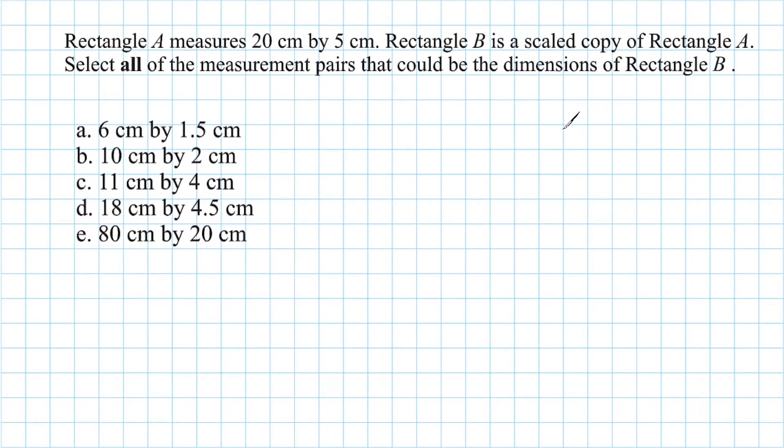Alright, so here's how I'm going to approach this problem. Let's take the dimensions of rectangle A, which are 20 centimeters by 5 centimeters, and I'm going to express this as a ratio. Now, it doesn't say which of the two is the length and which is the width, but I'm just going to call 20 the length and 5 the width.